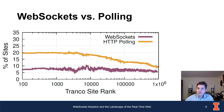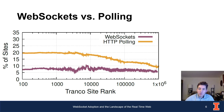From this graph we also see that HTTP polling is still significantly more common than WebSockets, especially at higher ranks where we expect sites to be more complex. That higher complexity is reflected in more HTTP polling in our dataset. WebSocket usage is pretty consistently distributed across the top million — about seven percent of sites in the top million use WebSockets.